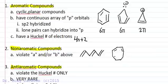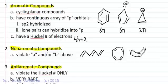Cyclooctatetraene is non-aromatic because it is not planar — it bends out of plane to relieve anti-aromaticity. It doesn't want to be anti-aromatic, so it becomes non-aromatic by violating the planarity rule for aromatic compounds.